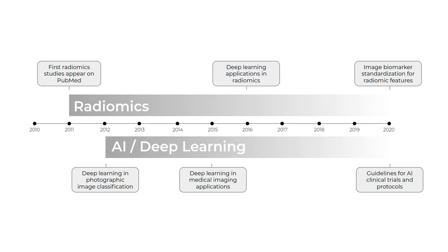To start off with a little bit of history, texture analysis is perhaps the precursor to radiomics and we've seen a lot of work in that area starting back in the 60s. More recently, just nine years ago, the term radiomics was coined, and so radiomics is almost a one-decade-old scientific field — a new addition to the omics family.